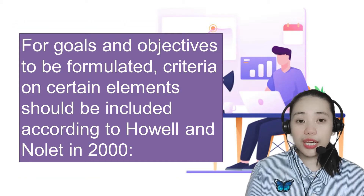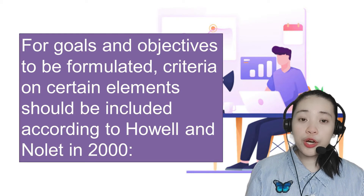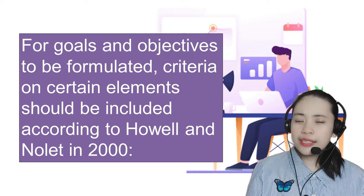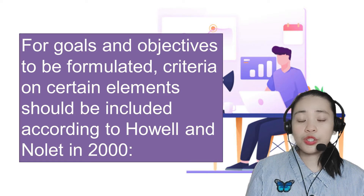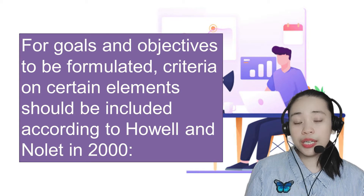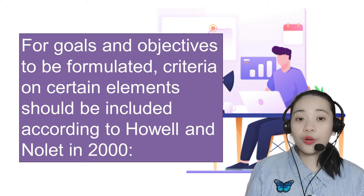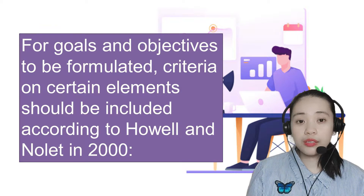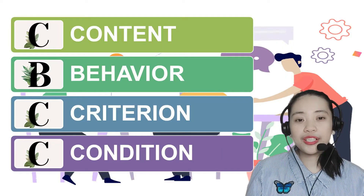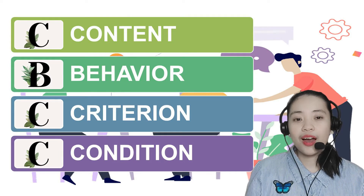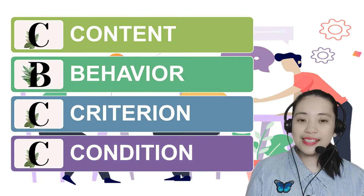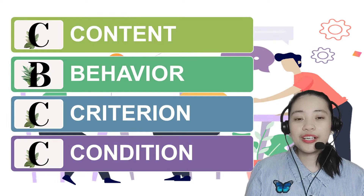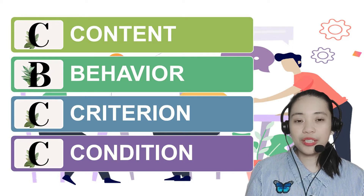For goals and objectives to be formulated, certain criteria elements should be included. According to Howell and Nolet in 2000, we have four criteria: content, behavior, criterion, and condition.